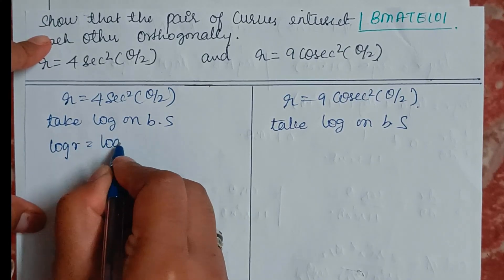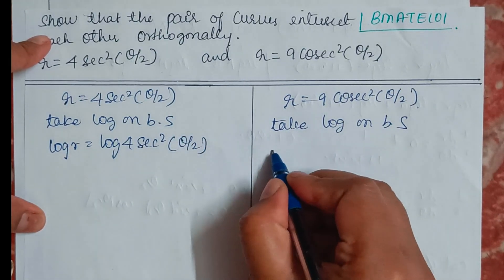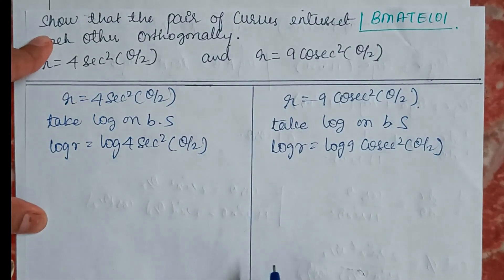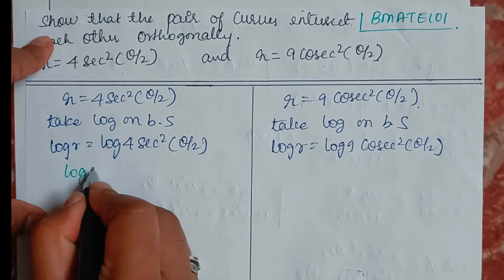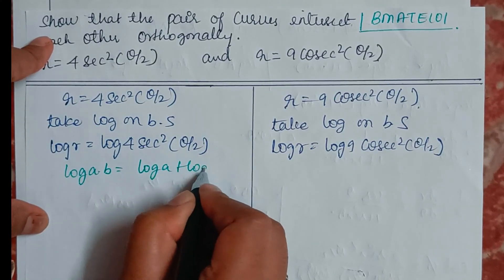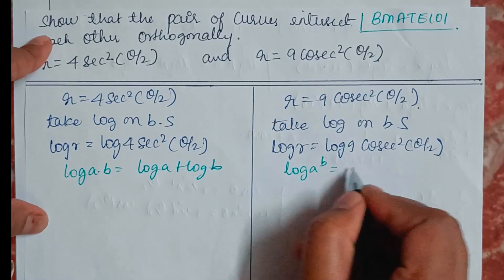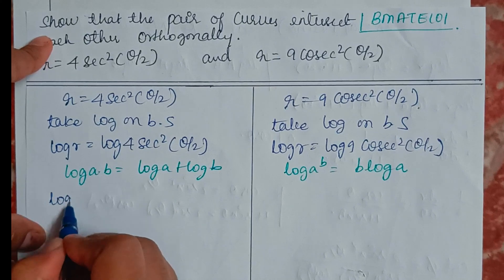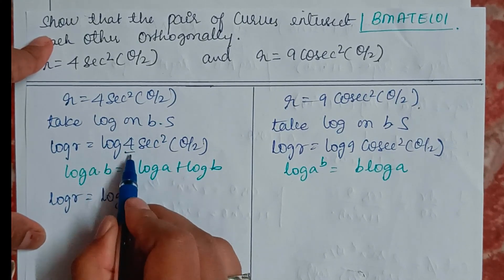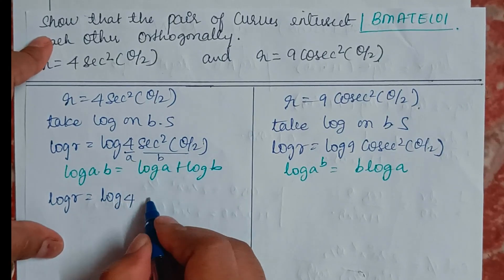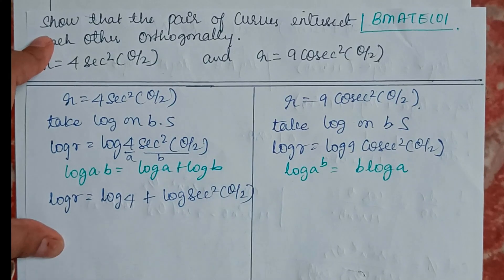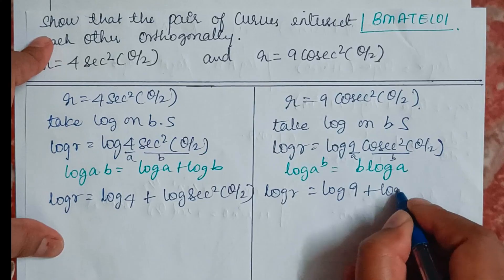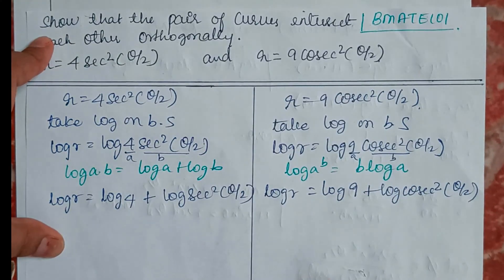Log R equals log(4 sec²(θ/2)) for the first curve, and log R equals log(9 csc²(θ/2)) for the second. Using the formula log(A·B) = log A + log B, we expand: log R = log 4 + log sec²(θ/2), and log R = log 9 + log csc²(θ/2).